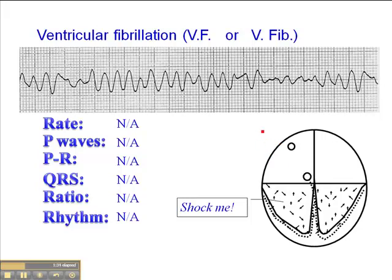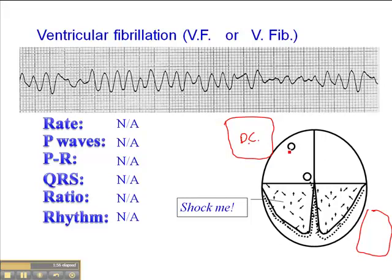The objective with ventricular fibrillation, or with pulseless ventricular tachycardia as mentioned in the previous slide presentation, is to defibrillate. Defibrillation involves placing pads on the chest — I won't talk about specifically where those pads go right now — but defibrillation utilizes direct current, DC current, unlike the current that comes out of our electrical outlets in North America, which is alternating current.